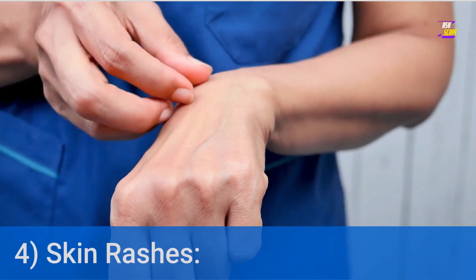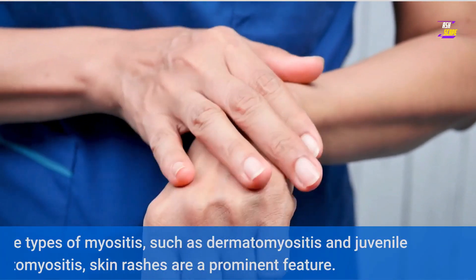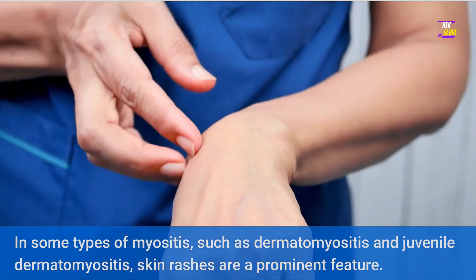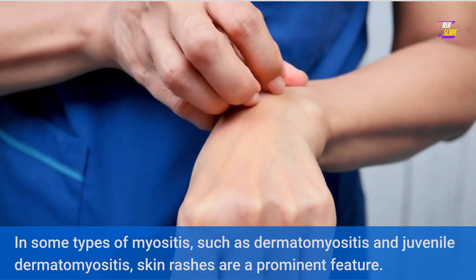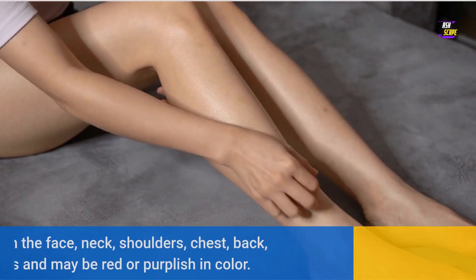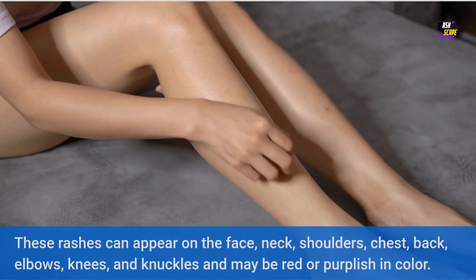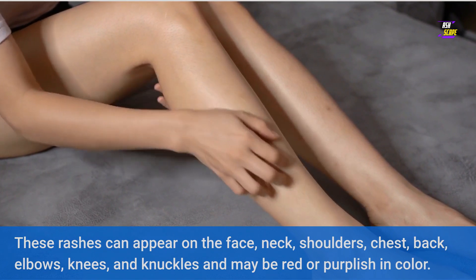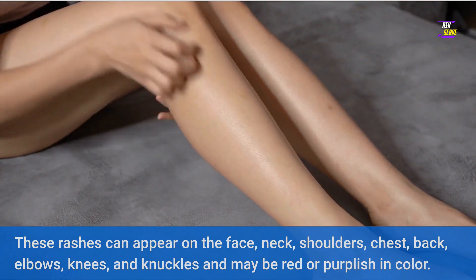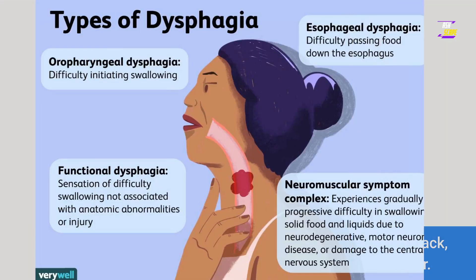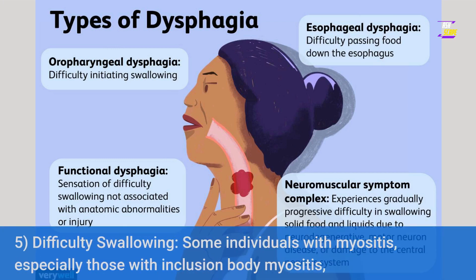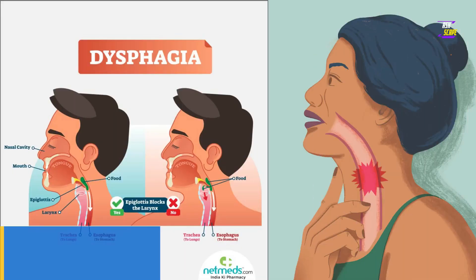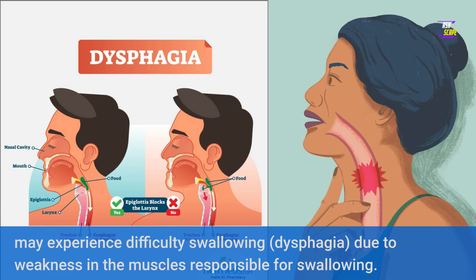4. Skin Rashes — in some types of myositis, such as dermatomyositis and juvenile dermatomyositis, skin rashes are a prominent feature. These rashes can appear on the face, neck, shoulders, chest, back, elbows, knees, and knuckles, and may be red or purplish in color. 5. Difficulty Swallowing — some individuals with myositis, especially those with inclusion body myositis, may experience difficulty swallowing (dysphagia) due to weakness in the muscles responsible for swallowing.